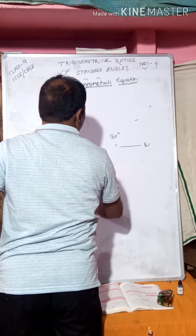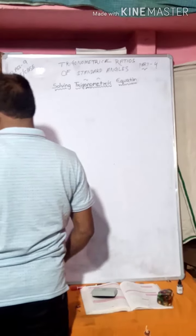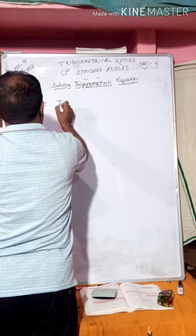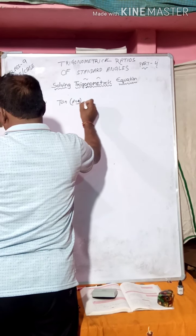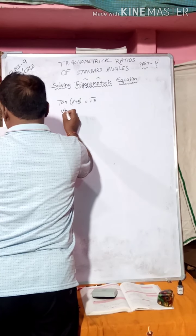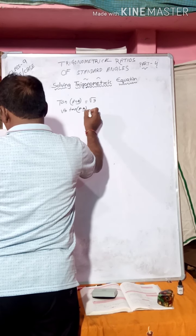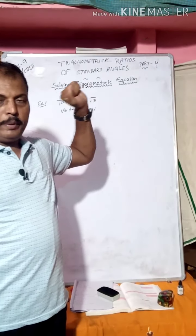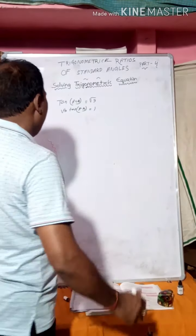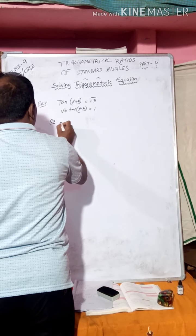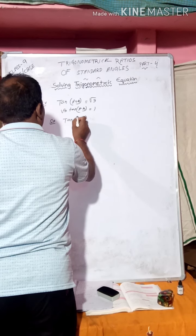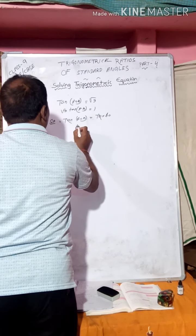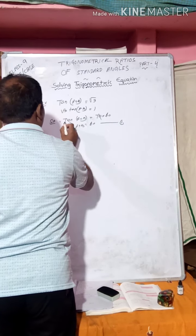Example 4: tan(A+B) = √3 and √3·tan(A-B) = 1. Find the values of A and B. We will find A+B and A-B, then solve for A and B. tan(A+B) = √3 means tan60°, so tan cancels giving A + B = 60°. That is equation 1.